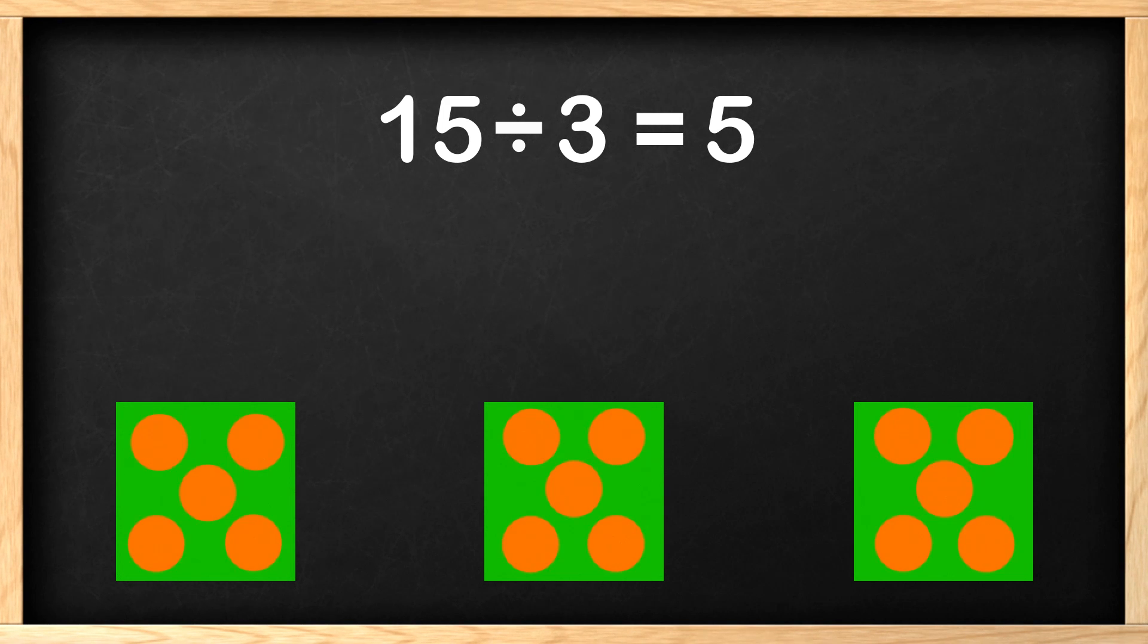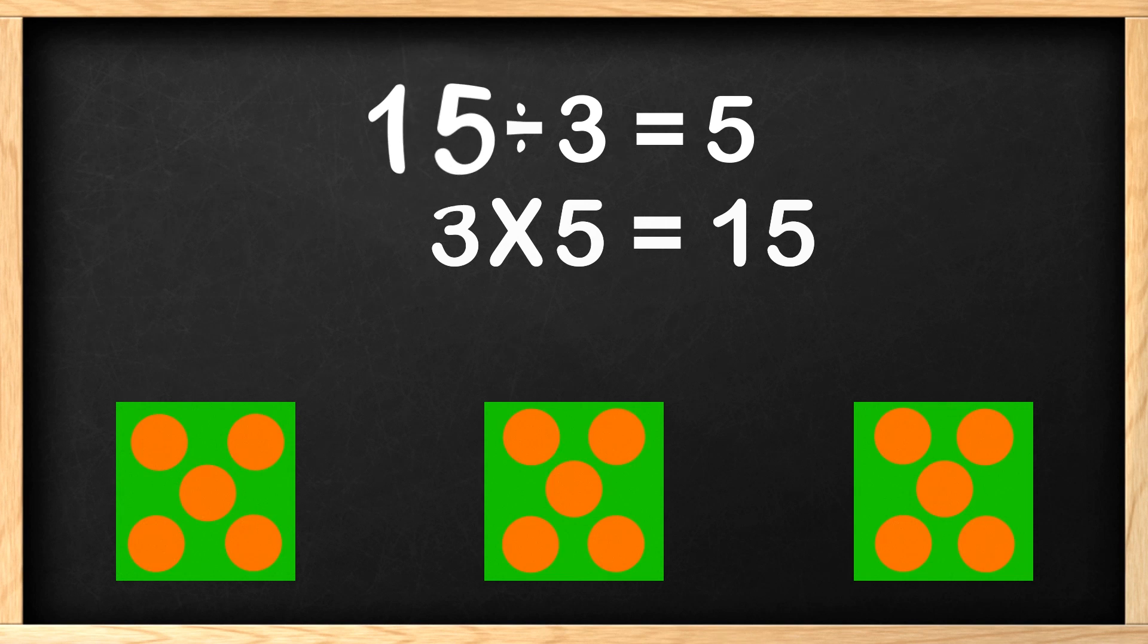Did you know that in every division problem there is also a multiplication problem? We had 3 groups of 5 and 3 times 5 equals 15. In the division problem up top, the 15 we are dividing by is the product in the multiplication problem. Now this may not seem like a big deal, but if we recognize that a division problem can be figured out by using multiplication, it can make things so much easier.